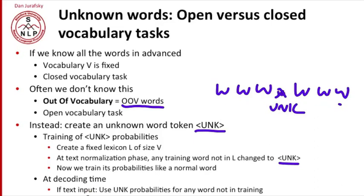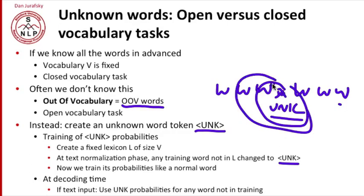And now at decoding time, if you see a new word you haven't seen, you replace that word with unk and treat it like get its bigram probabilities and its trigram probabilities from the unk word in the training set.